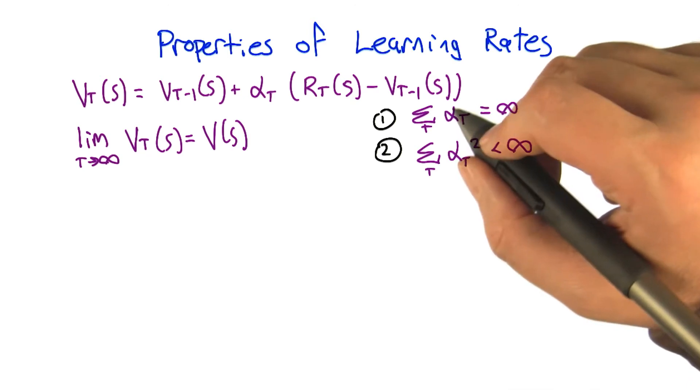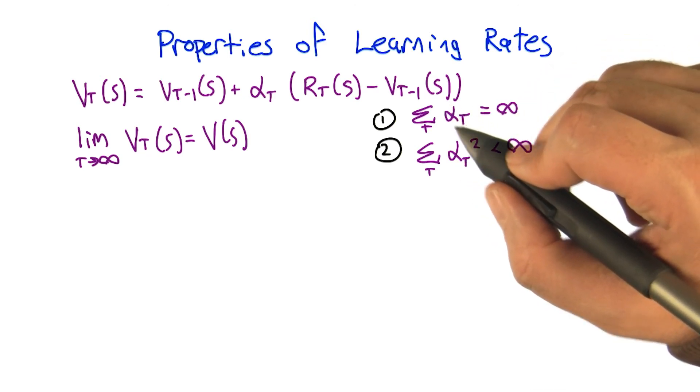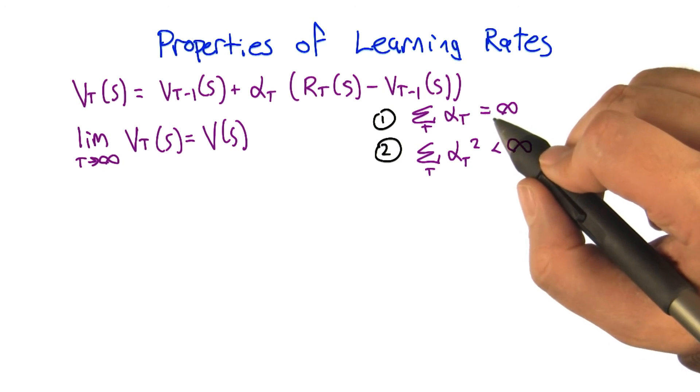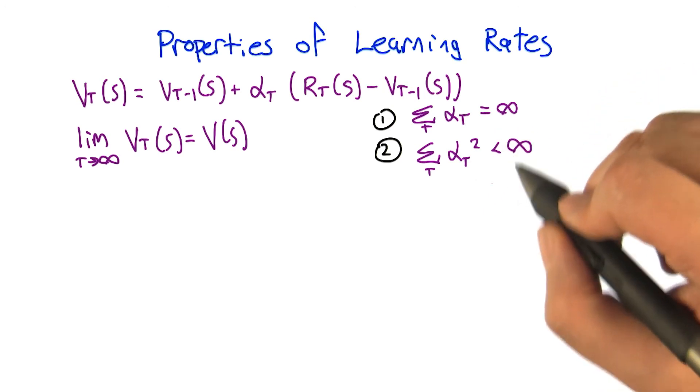But to a first approximation, the learning rates have to be big enough so that you can move to what the true value is no matter where you start. But they can't be so big that they don't damp out the noise and actually do the proper job of averaging.